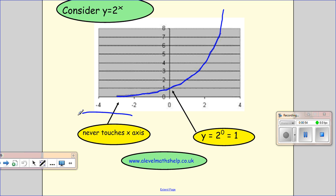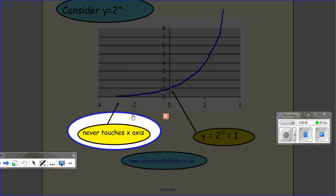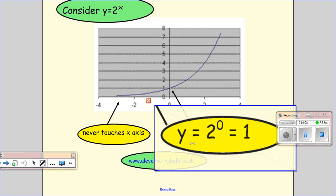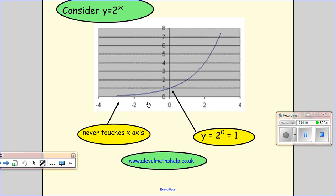So we can see here that we never touch the x-axis, although it does get very close to the x-axis as x gets much smaller. Here we can see when x equals 0, we have y equals 1, and we can see that we're always positive.